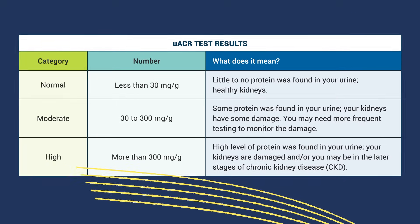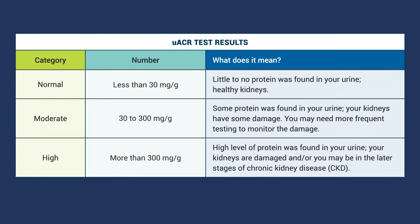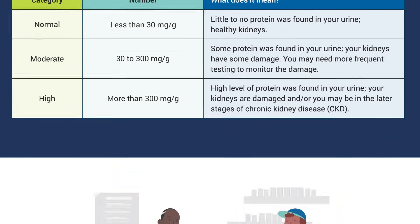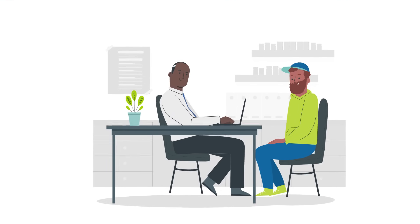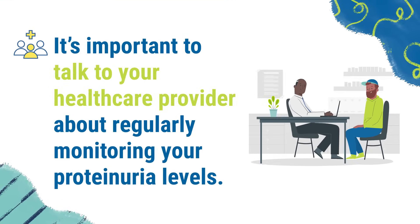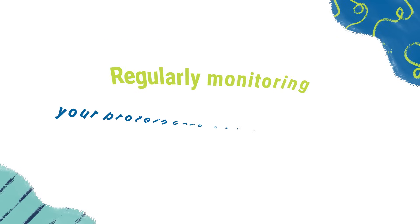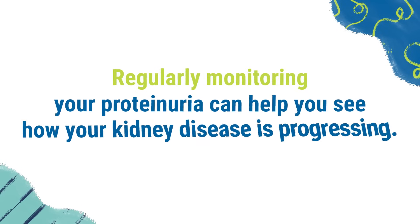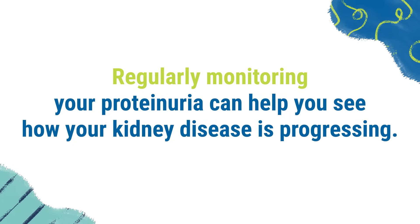Look at your lab report results to find your UACR level. Since you may not have signs and symptoms of proteinuria, it's important to talk to your healthcare provider about regularly monitoring your proteinuria levels. Regularly monitoring your proteinuria can help you see how your kidney disease is progressing.